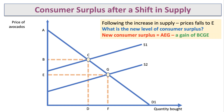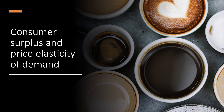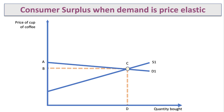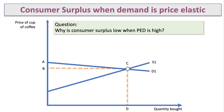There's an important link between consumer surplus and price elasticity of demand. Take the market for takeaway coffees in a town centre with lots of choice. The demand curve is drawn as fairly elastic. Notice that the level of consumer surplus — area ABC — is fairly small. Consumer surplus is low when price elasticity of demand is high.